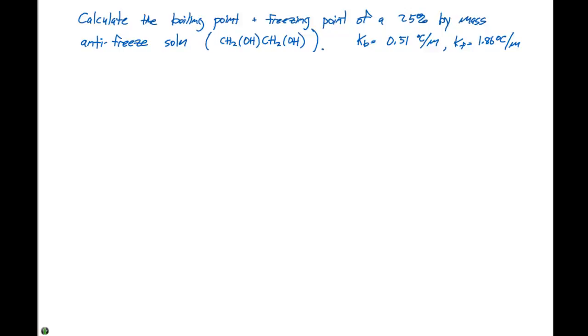In this example problem, we're asked to calculate the boiling point and freezing point of a 25% by mass antifreeze solution. The antifreeze contains CH2OH CH2OH. We have a KB of 0.51 degrees Celsius per molal and a KF of 1.86 degrees Celsius per molal.